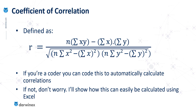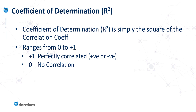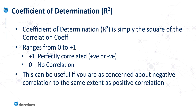Following on from this, there's a further technique called the coefficient of determination, known as R squared. Once you've calculated the previous coefficient, this one's simple — you just square the value. This means the range is now between 0 and positive 1, where positive 1 represents any perfect correlation regardless of whether that was negative or positive, and a value of 0 still represents zero correlation. Why is this useful? Well, if you're as concerned about positive correlation as you are about negative correlation, then this gives us the ideal mechanism of measuring what we need. And when it comes to measuring correlation across a portfolio, that is usually the case.